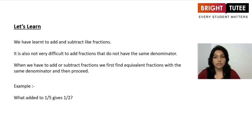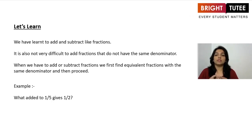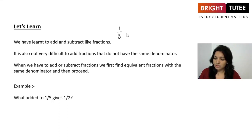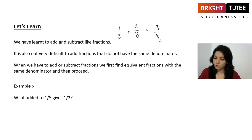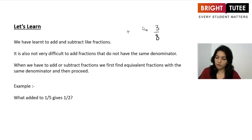When we have to add or subtract fractions, we first find equivalent fractions with the same denominators and then we proceed. Simple method: if you have a like fraction, say 1 over 8, and you add 2 over 8, this is really simple. We simply add the numerators, so it will be 3 over 8. This is how we work with like fractions.